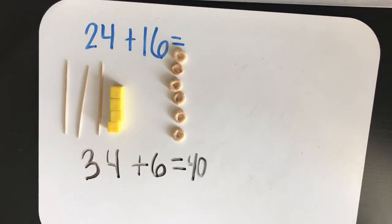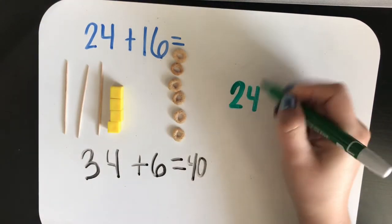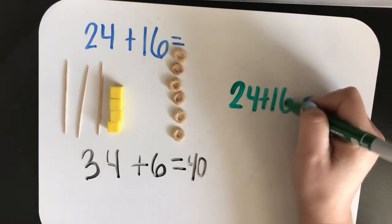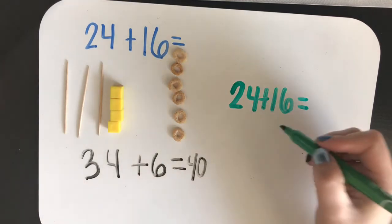Good. Now, let's use our number sentences to explain what we did. Let's start with our first number sentence, twenty-four plus sixteen. And we're going to break apart the smaller number.